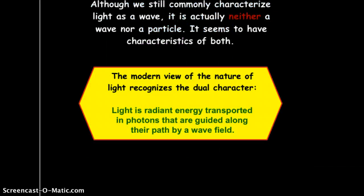Now, this is all too much and it all seems too confusing, but you know what? Neither the wave theory nor the particle theory can completely explain the nature of light. So, today, our modern view is that light has a dual character. Light is radiant energy transported on photons, which are packets of light, and packets of light have excited electrons that are guided along a path, and that path works in a wave field.